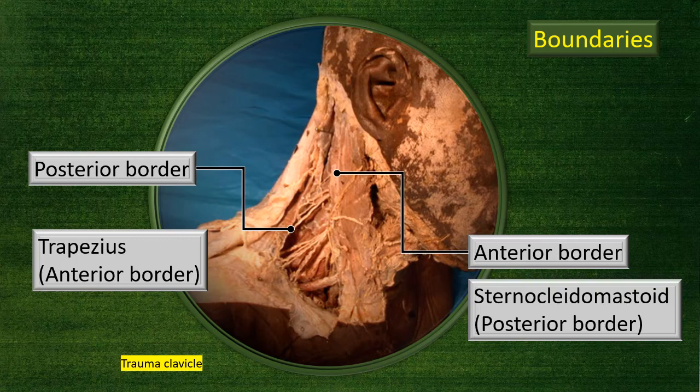Any trauma to the clavicle where the clavicle is broken means the broken ends can impinge against neighboring structures. Right behind this part of the clavicle, the subclavian vein is present, and the trunks of the brachial plexus uniting to form the cords are also there. So clavicular trauma is very important given its relevance to the posterior triangle.